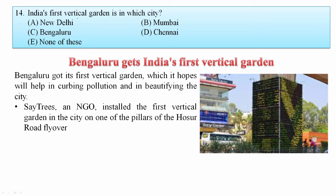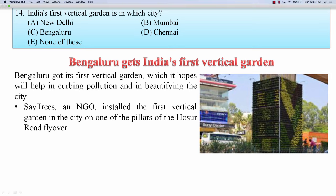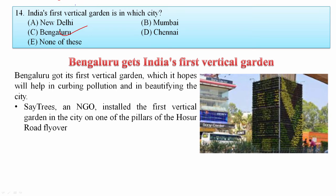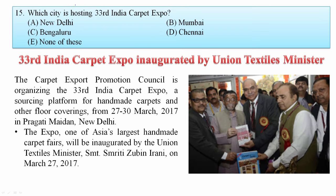India's first vertical garden is in which city? Bengaluru gets India's first vertical garden, which will help to curb pollution and beautify the city. Your answer is Bengaluru.